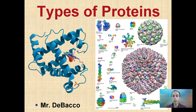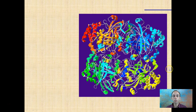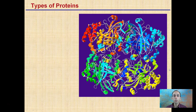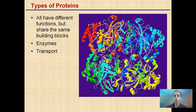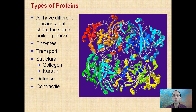Here we're going to touch on the types of proteins. As a general quick short summary, there are many different types of proteins, keeping in mind that the types of proteins can be defined by their shape, because that will help determine potentially their function. They all have different functions but share the same building blocks, and those building blocks are amino acids.